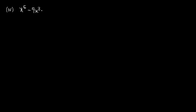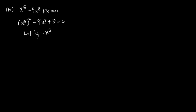For the final expression we have x⁶ - 9x³ + 8 = 0. This looks a little different from the first three examples — it is raised to the power 6 — but the method is the same. We rewrite x⁶ as (x³)², so (x³)² - 9x³ + 8 = 0. We now let y = x³, replacing x³ with y to get y² - 9y + 8 = 0.